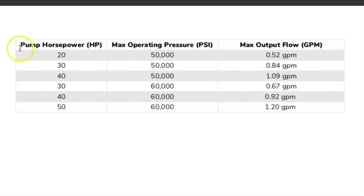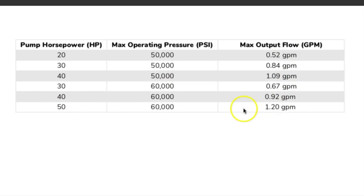Next let's take a look at a direct drive chart. You can notice here that we still have horsepower, psi, and GPM. Notice how we have 50,000 psi with 20, 30, and 40 horsepower options, and then 30, 40, and 50 horsepower at 60,000 psi with corresponding GPMs. Looking at the 50 horsepower direct drive: we get 60,000 psi but 1.2 GPM — about 20% more flow rate than an intensifier pump.